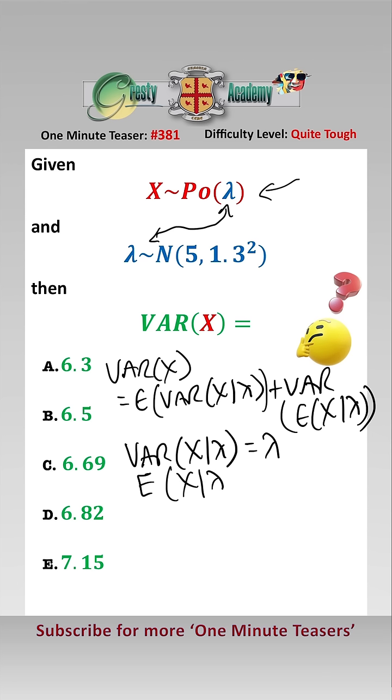Also E(X|λ) is also equal to λ, again because X is a Poisson distribution. So VAR(X) is equal to, just plugging them in here, E(λ) plus VAR(λ).